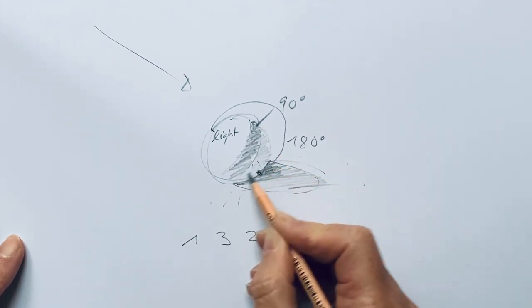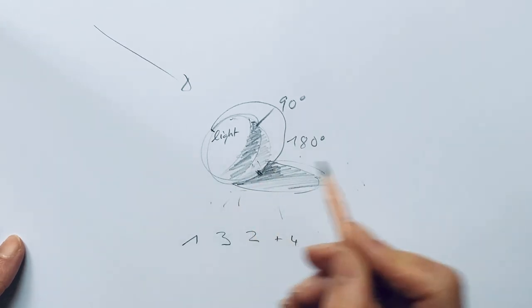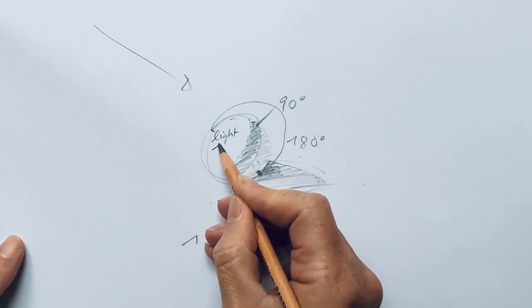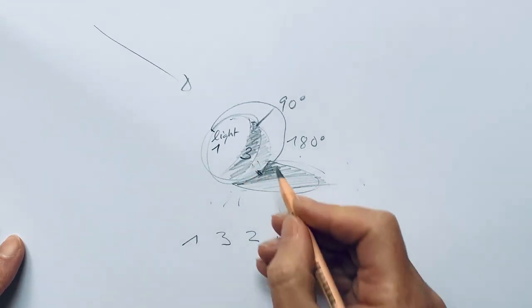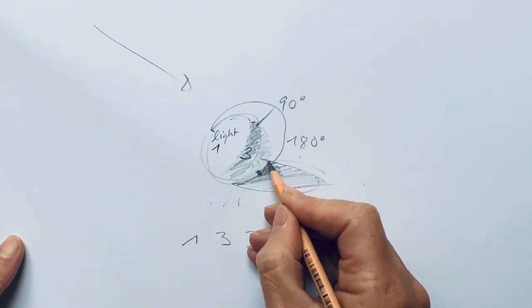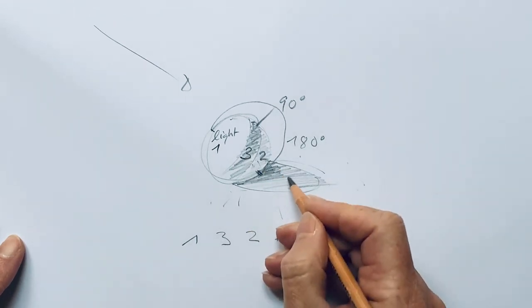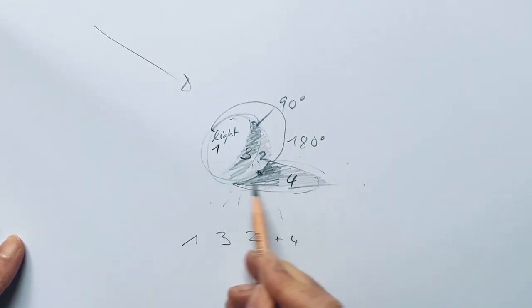And we have the transition of 1 - the lightest - to 3, something in the middle, then again 2, a little bit lighter, and 4 for the cast shadow.